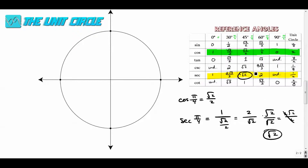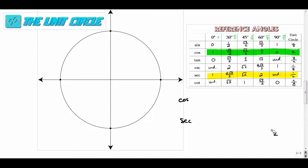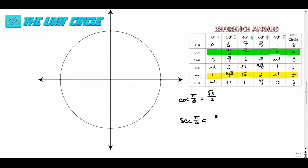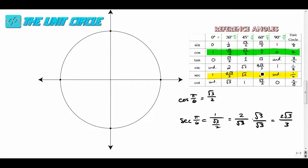For pi over six: the cosine of pi over six, from our special right triangles, is radical three over two. The secant of pi over six is one over that — flip it to two over radical three, rationalize since you can't have radicals in the denominator, and you get two root three over three. Another important value: the secant of pi over three is two because the cosine of pi over three is one half — you just flip them.